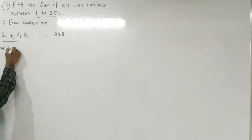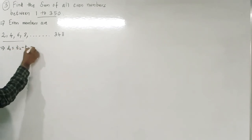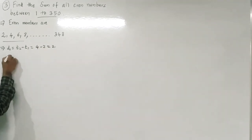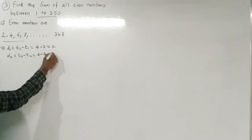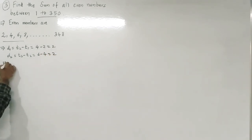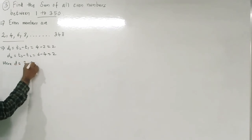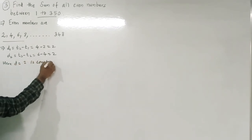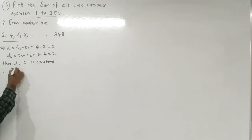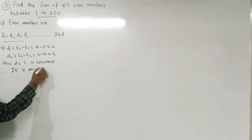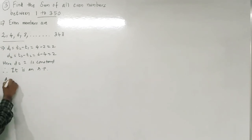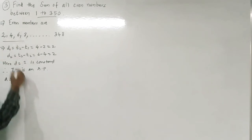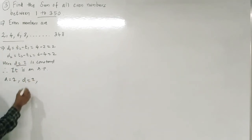We check whether the sequence is an AP: d1 = t2 − t1 = 4 − 2 = 2, and d2 = t3 − t2 = 6 − 4 = 2. Since d = 2 is constant, therefore it is an AP.